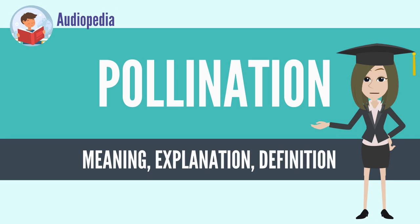Pollination is the transfer of pollen from a male part of a plant to a female part of a plant, enabling later fertilization and the production of seeds, most often by an animal or by wind.